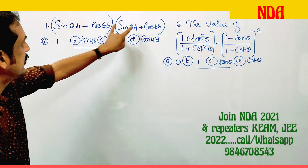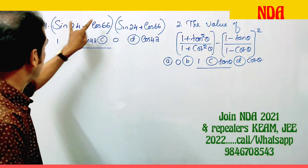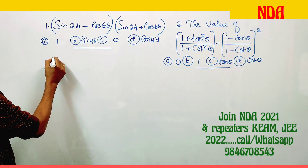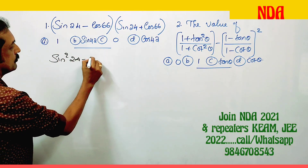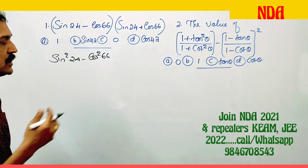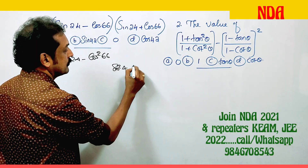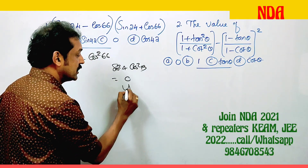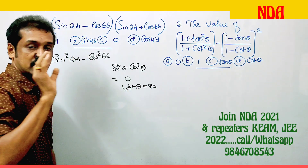We have sin 24 and cos 66. This is in the form of (a minus b)(a plus b), which equals a squared minus b squared. That gives us sin squared 24 minus cos squared 66. The result: sin squared a minus cos squared b is equal to 0 when a plus b equals 90.